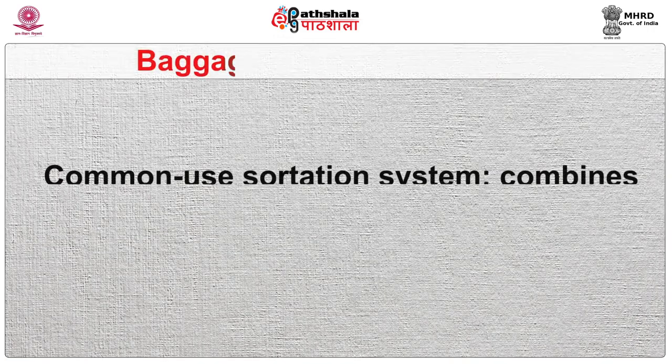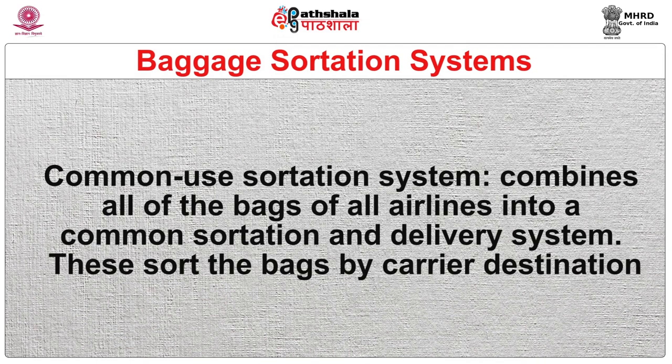Second is decentralized sortation — localized to gates — which sorts bags at two or more locations with actual sortation performed adjacent to the individual airplane. Third is the common use sortation system, which combines all bags of all airlines into a common sortation and delivery system, sorting bags by carrier destination. Fourth is manual sortation, which does not use ATRs or UECs; the baggage sorting occurs manually by using manual encode stations (UEC) in the baggage makeup area.